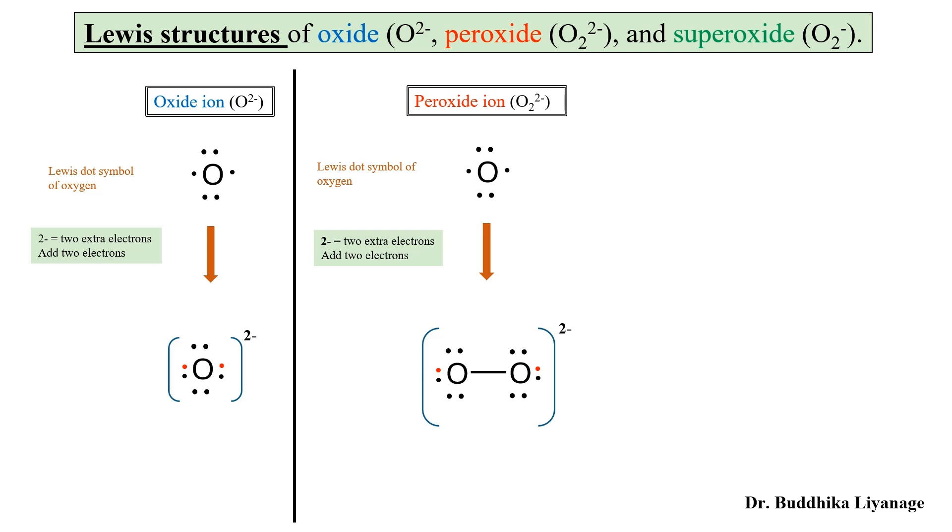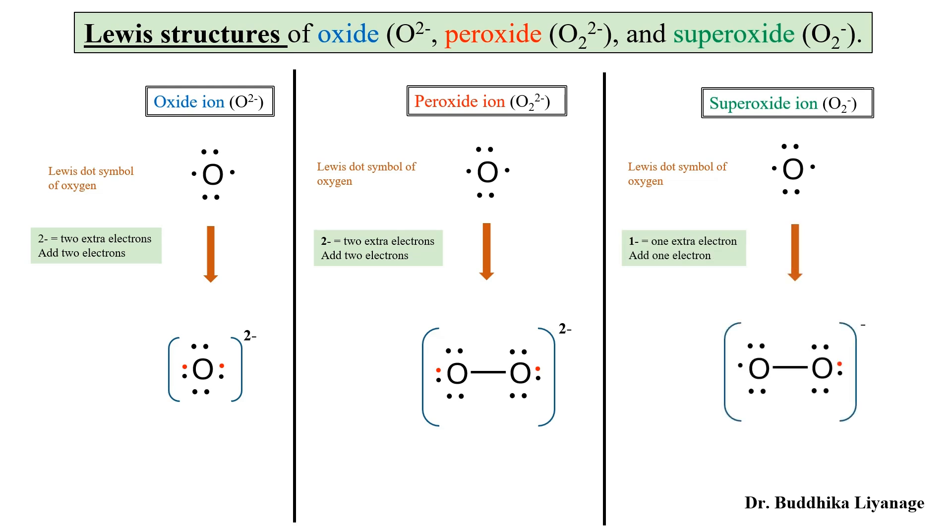Next one, superoxide ion. Superoxide ion O₂⁻, there should be two oxygen atoms, charge is one minus. From the dot symbol, one minus means one extra electron. So let's make an oxygen-oxygen single bond covalent bond, sharing singly occupied electron on one oxygen with another oxygen's singly occupied electron.